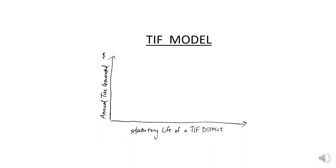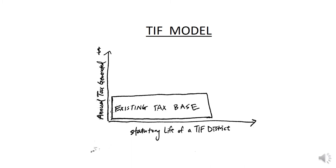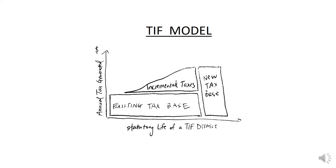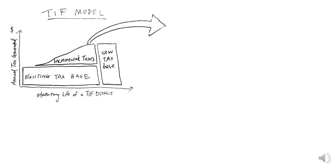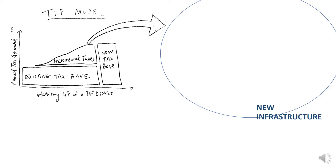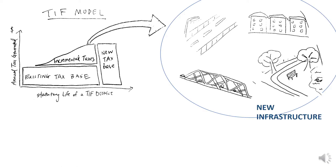When a TIF district is established, the tax revenue collected within the district for distribution to schools and other government entities is frozen. As this money is being spent on the TIF district, it's expected that property value will rise within the TIF. The extra tax revenue generated by that rise is supposed to be earmarked for improvements within the TIF. Cities use TIF to finance public infrastructure, land acquisition, demolition, and other improvements.